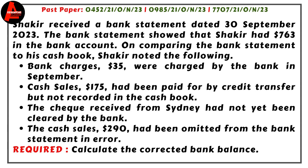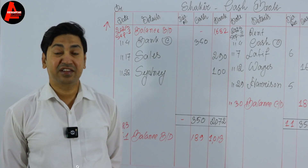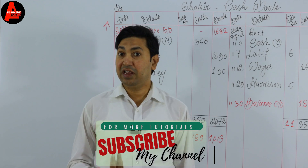Shakir received a bank statement dated 30 September 2023. The bank statement showed that Shakir had 763 dollars in his bank account. He found that bank charges of 35 dollars were charged by the bank in September; cash sales of 175 dollars had been paid by credit transfer; the check received from Sydney had not been cleared by the bank; and cash sales of 290 dollars had been omitted from the bank statement in error.